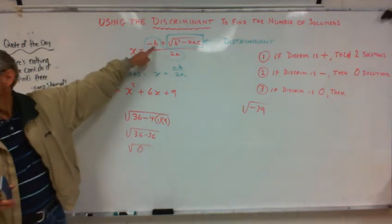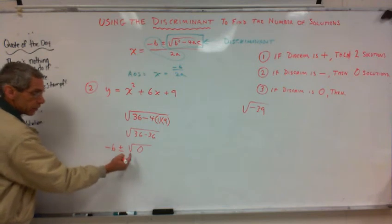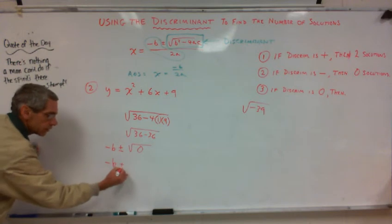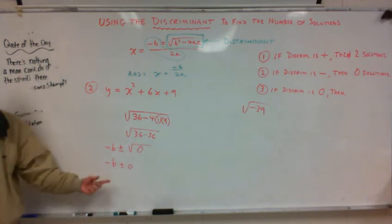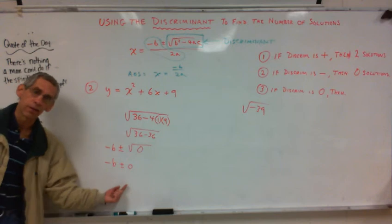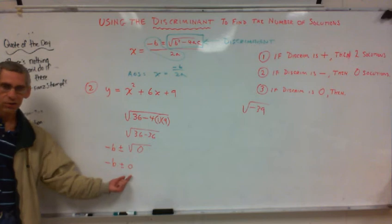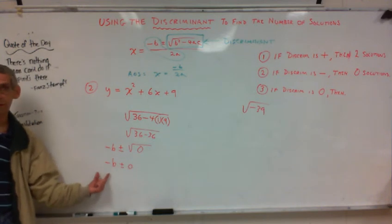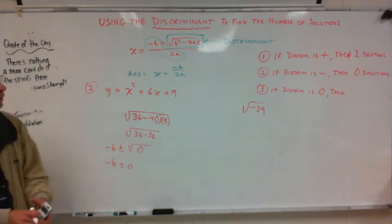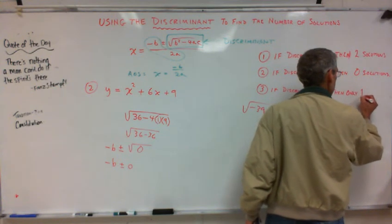Let's go back to the quadratic formula for a second. If I had negative B and I'm adding plus or minus the square root of zero — what's the square root of zero? Zero. So if I have negative B plus or minus zero, there's only going to be one answer. Because if I add nothing to negative B, I still have negative B. If I subtract nothing from negative B, I still have negative B. Zero doesn't change anything whether I add or subtract it. So there's only one answer, which happens to be negative B over 2A. One solution.